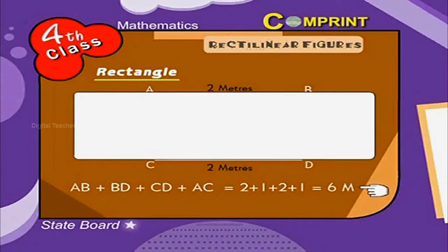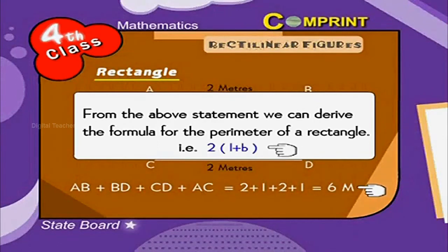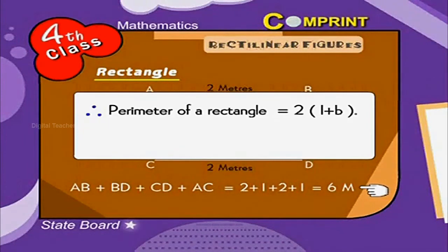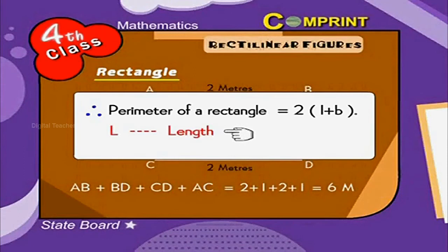From the above statement we can derive the formula for the perimeter of a rectangle. That is 2 into L plus B, written as 2(L + B). Therefore, perimeter of a rectangle is equal to 2 into L plus B, where L stands for length and B stands for breadth.